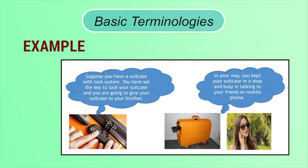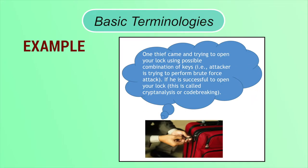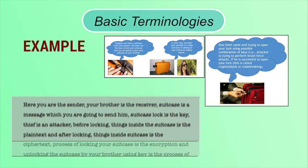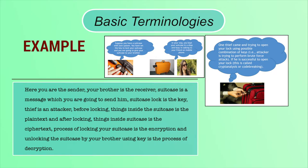Suppose you have a suitcase with a lock and you are going to give it to your brother. A thief came and tried to open your lock using possible key combinations — that is, the attacker is trying to perform a brute force attack. If he succeeds, this process is called cryptanalysis or code breaking. You are the sender, your brother is the receiver, the suitcase is the message, and the lock is the key. Locking the suitcase is encryption and unlocking it is decryption.